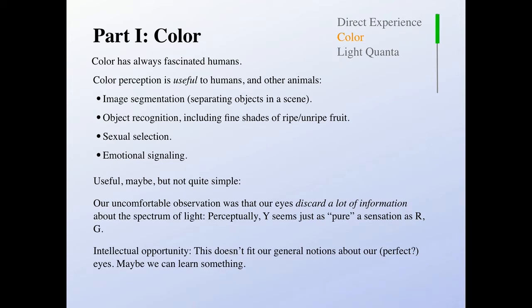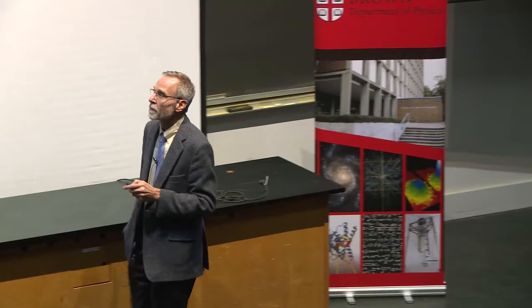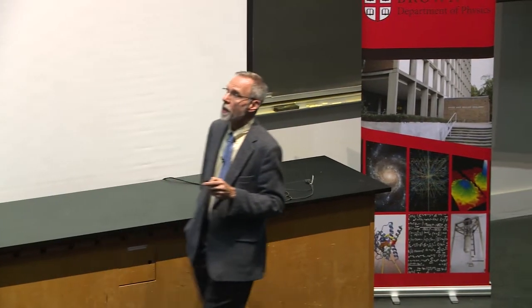Whether that individual over there is in an aggressive state or not in a friendly state, you know, some animals use color for that. So, okay, it's simple. It is beautiful, but it's not quite simple, is it? And we found that little funny paradox that we need to understand. We made that uncomfortable observation that our eyes discard a lot of information that's potentially present in the visual world. Our eyes are throwing some of that away. That's why we can't tell the difference between that impure yellow and the pure yellow that is part of the spectrum.